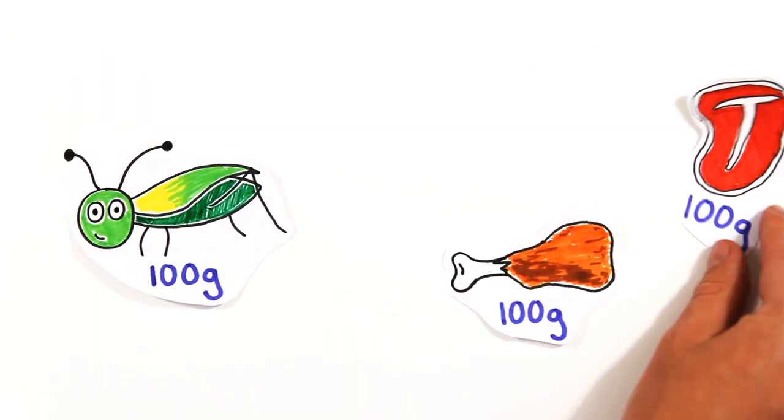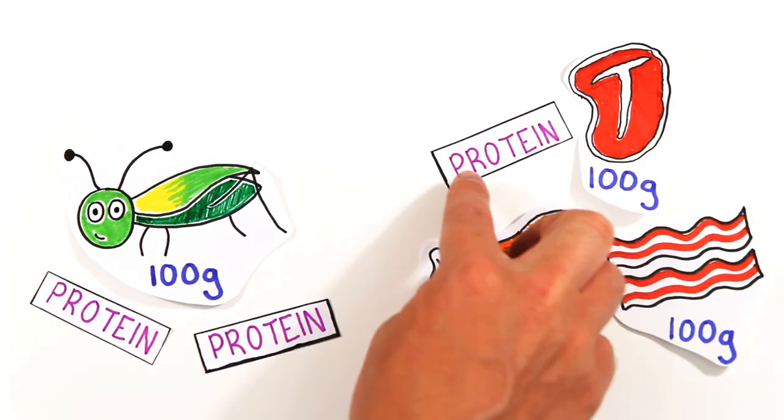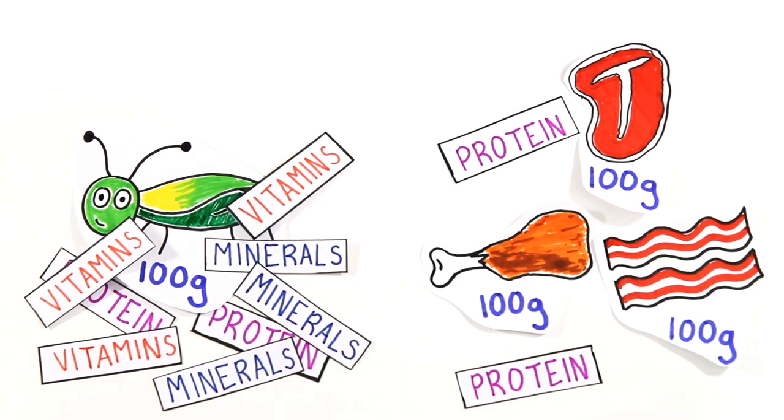Compare 100 grams of crickets to 100 grams of chicken, beef or pork, and you'll find that they have comparable protein content, but crickets are much higher in essential vitamins and minerals such as calcium, zinc, and iron.